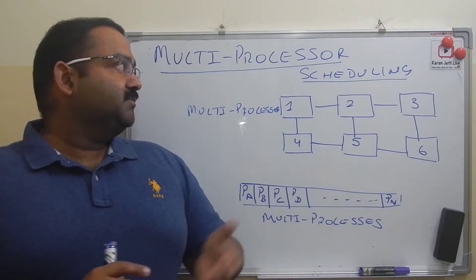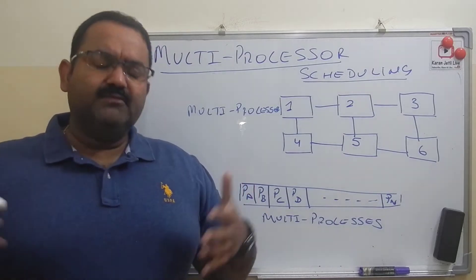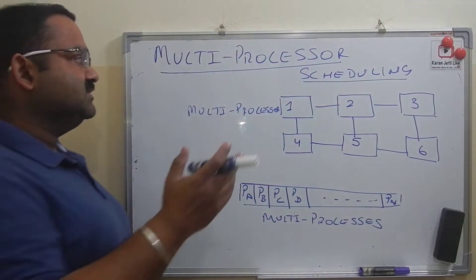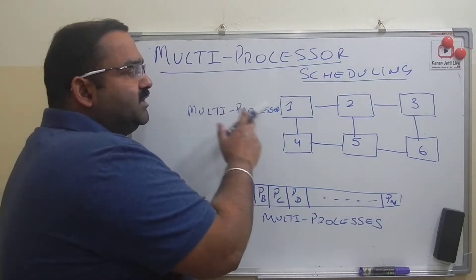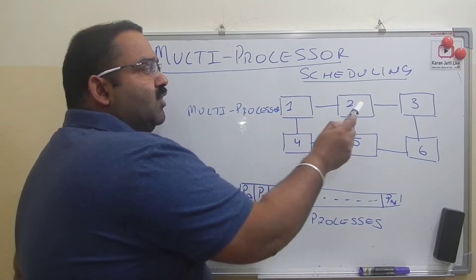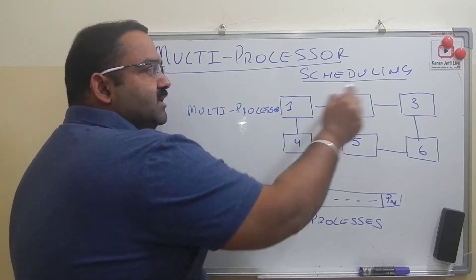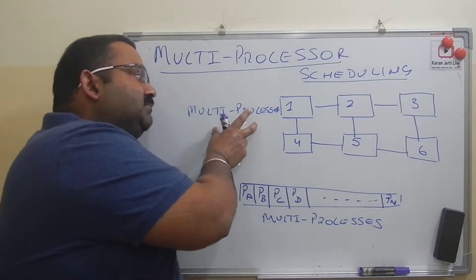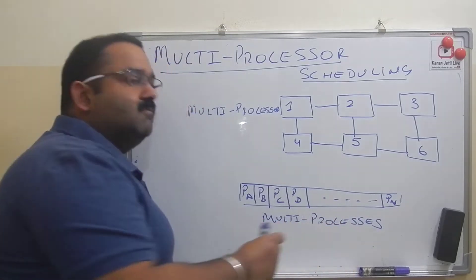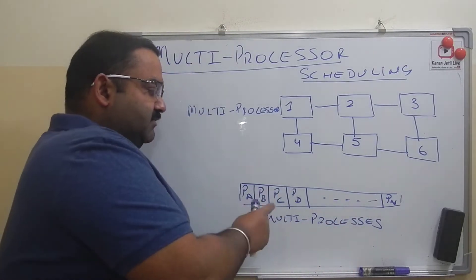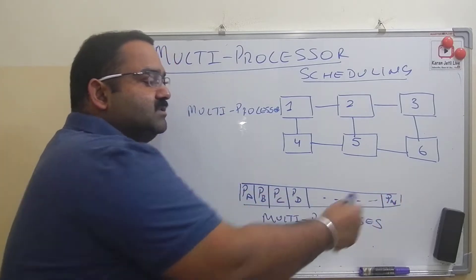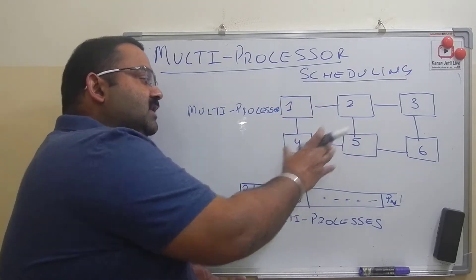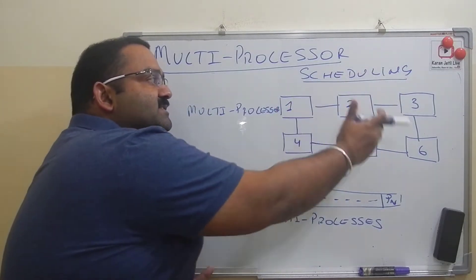Before we discuss multi-processor scheduling, we will briefly discuss the multi-processor environment. In a multi-processor environment, we have multiple processors — for example processor 1, 2, 3, 4, 5, 6 — and all of them are connected to each other using an interconnect. We also have multiple processes, for example process A, B, C, D and up to N. So in a multi-processor environment, multiple processors can run multiple processes on them.